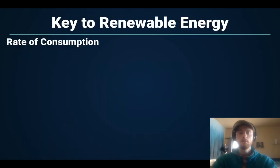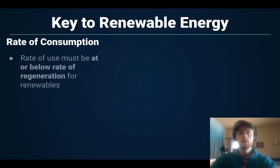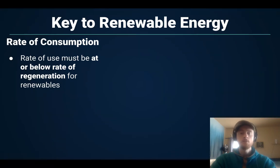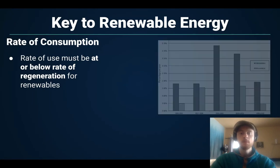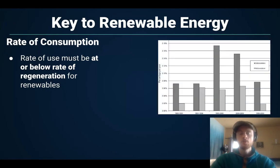The key to renewable energy resources is the rate of consumption. We have to consume them at a rate that is at or below the rate that they regenerate — we can't use them faster than they replenish themselves. This graph will show us an example of doing just that.